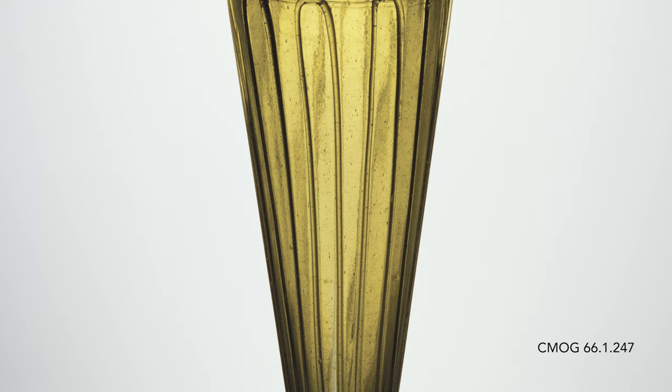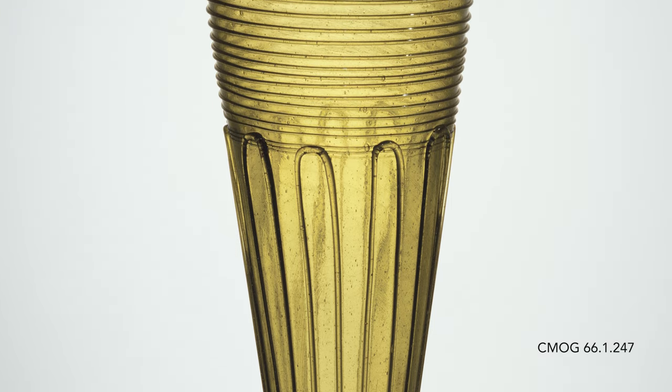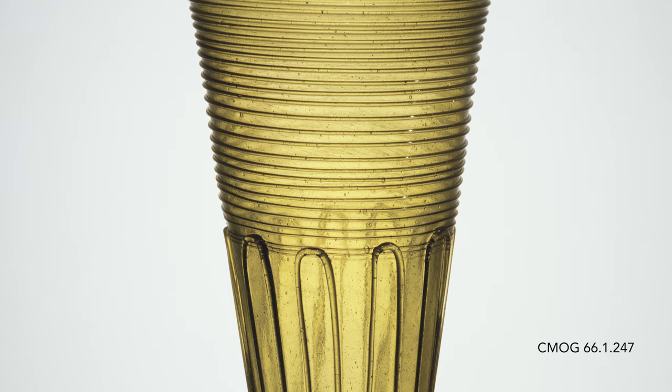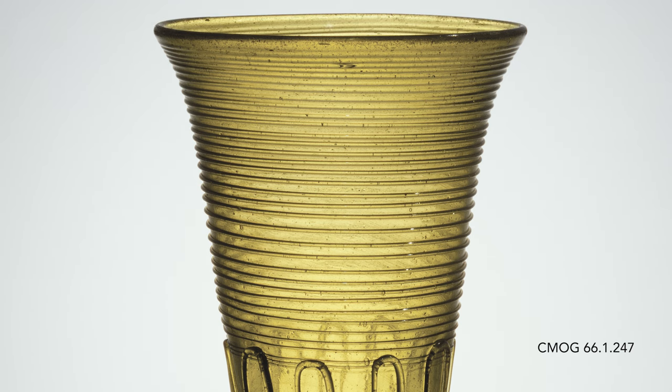Cone beakers with these characteristic looped decoration threads are from the mid-5th to the 6th century. The best known example is called the Kempston beaker because it was found in Kempston, England.